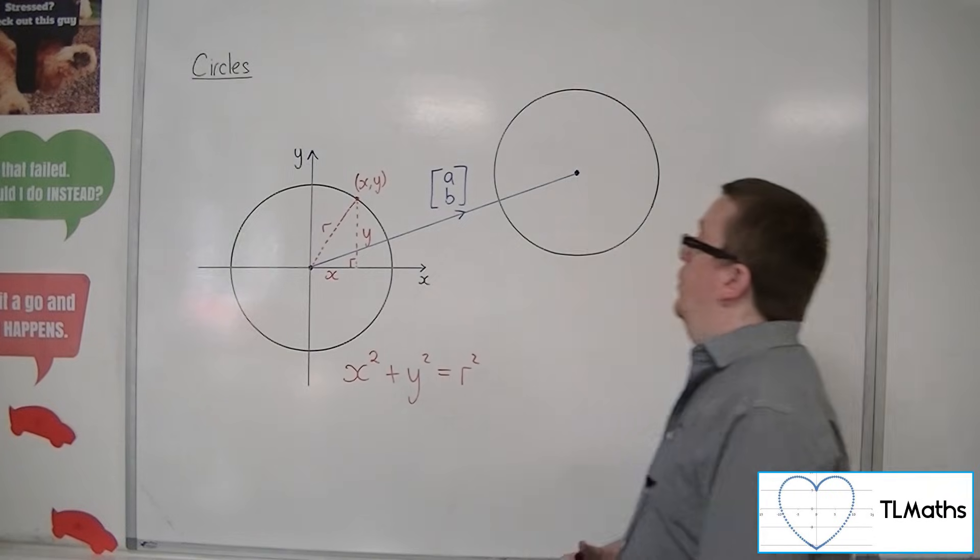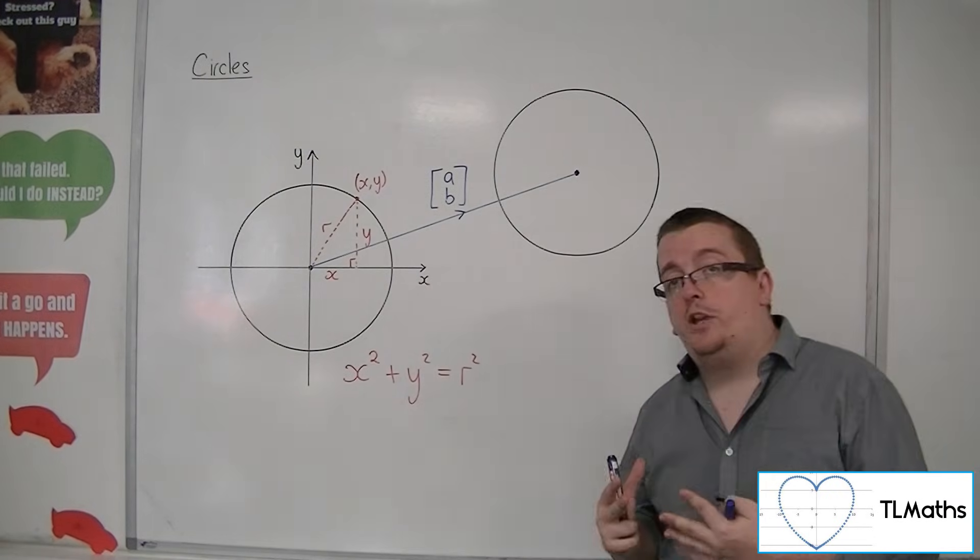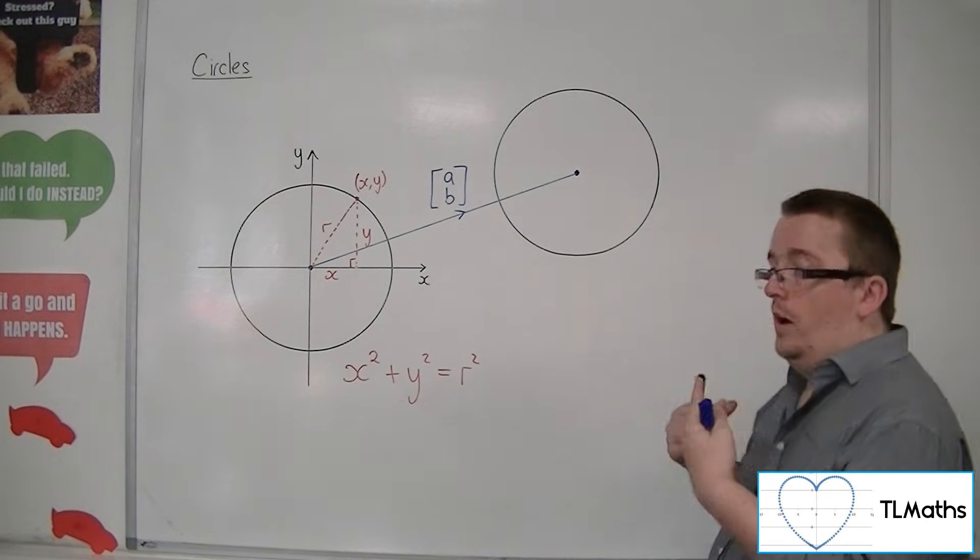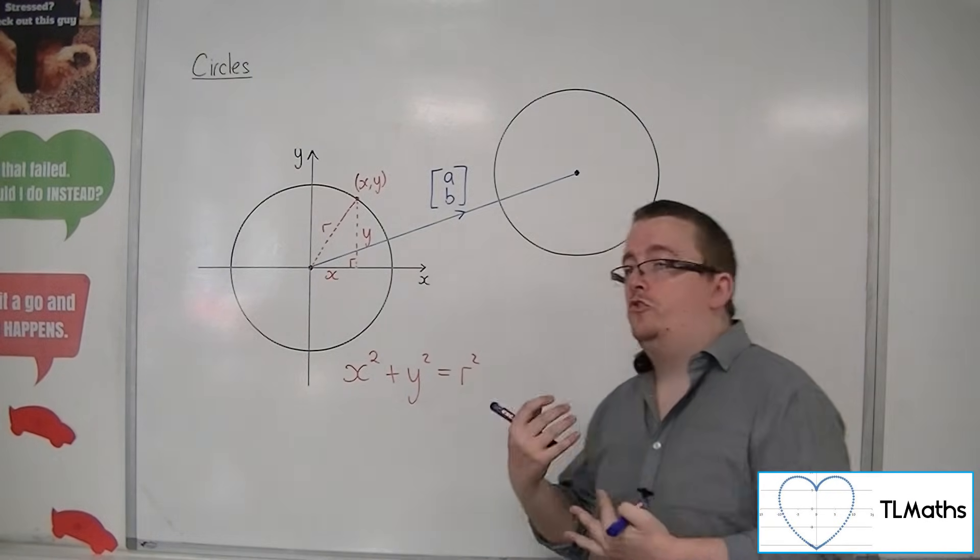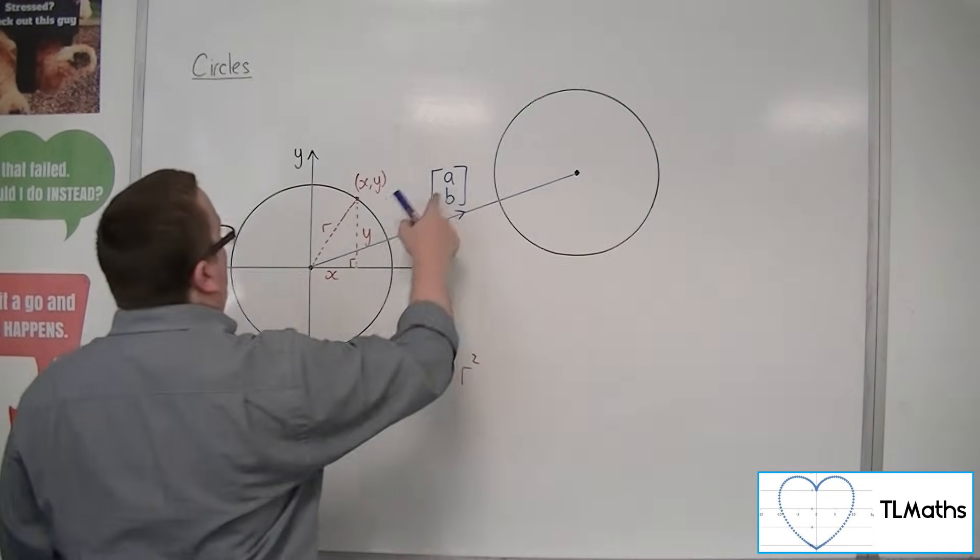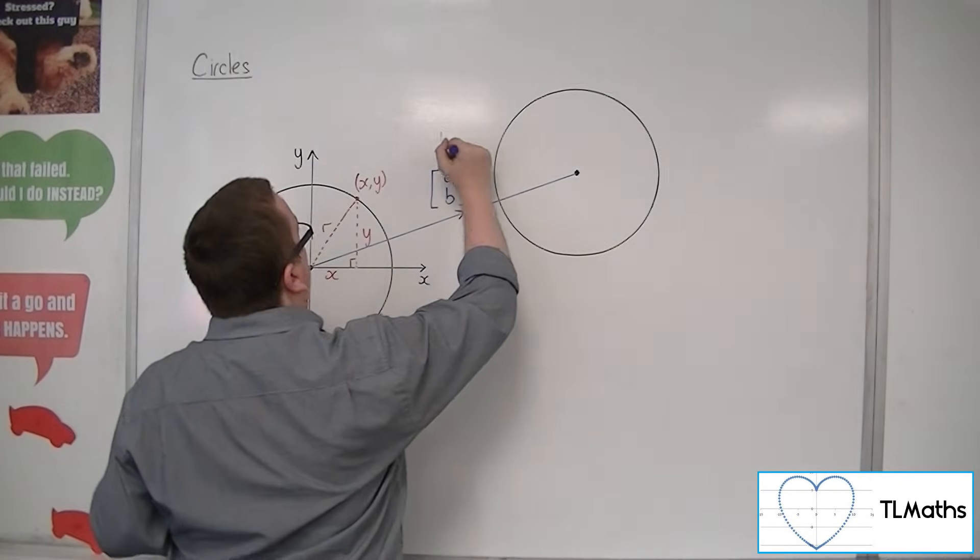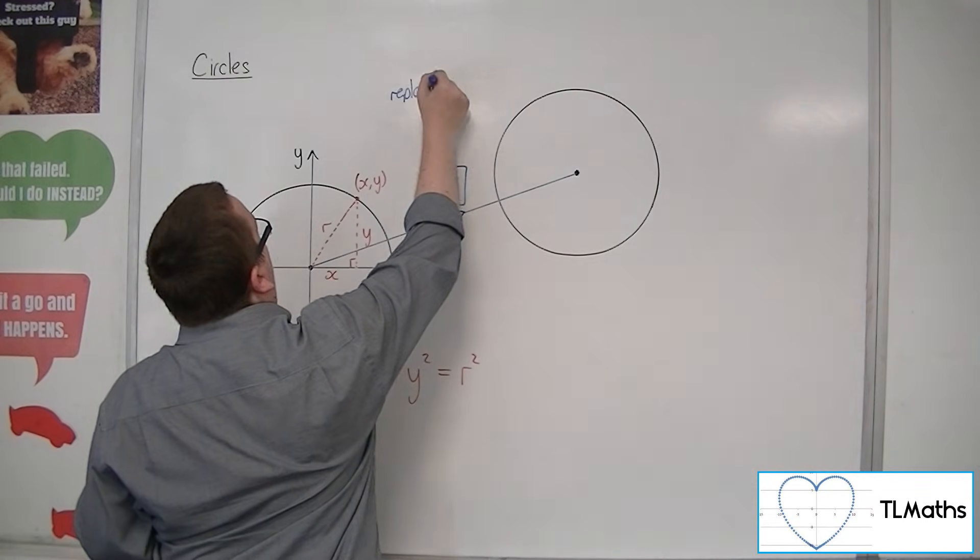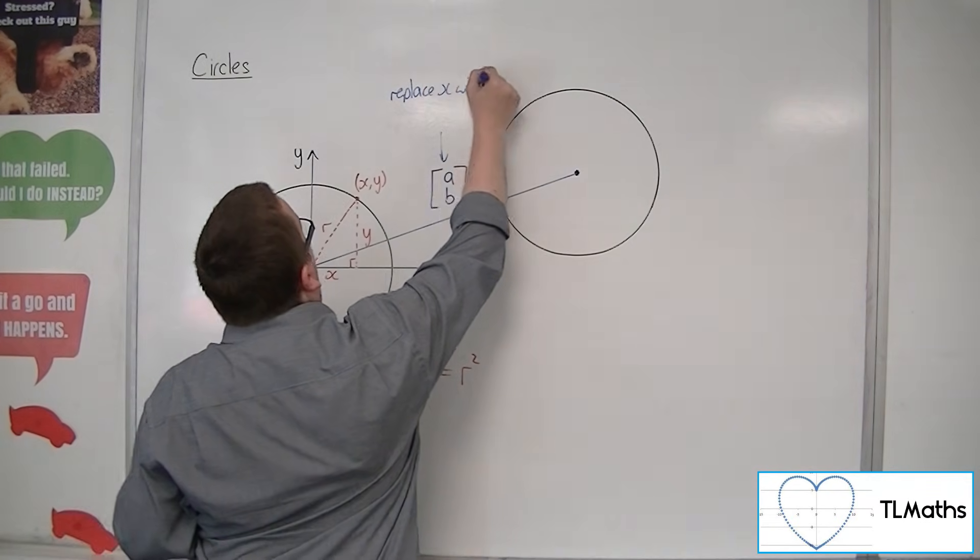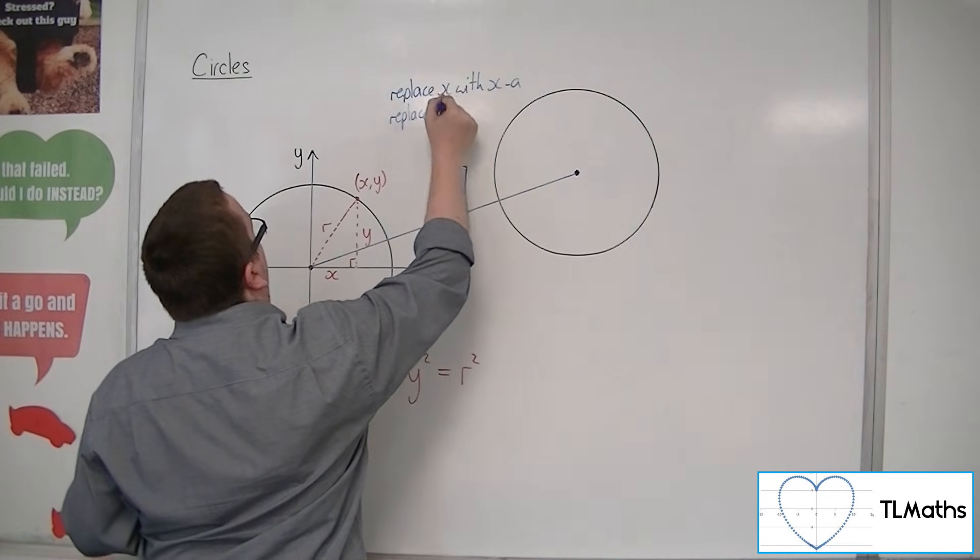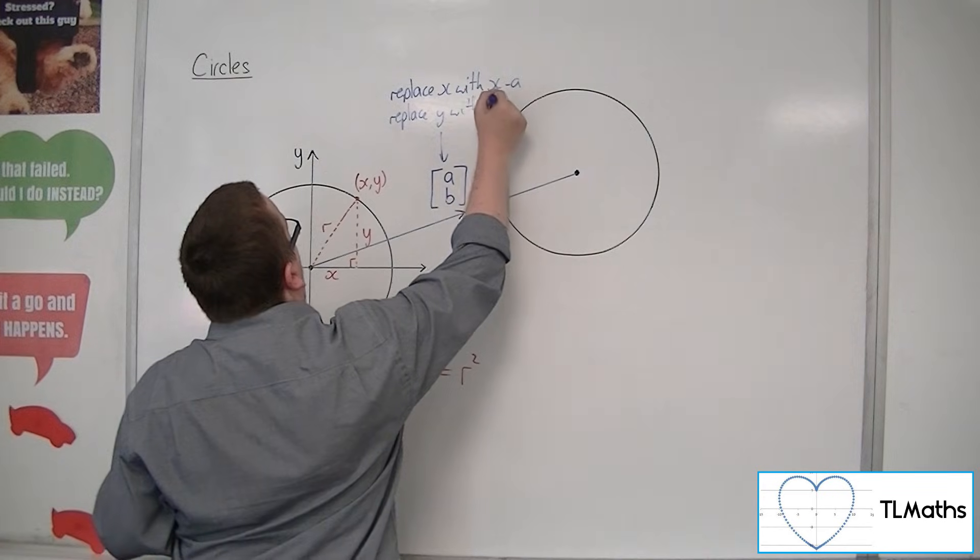What I want to know is what is the new equation of this circle. Understanding what we've done with translations before, if I translate by a vector AB, I replace the x with (x - A) and I replace the y with (y - B).